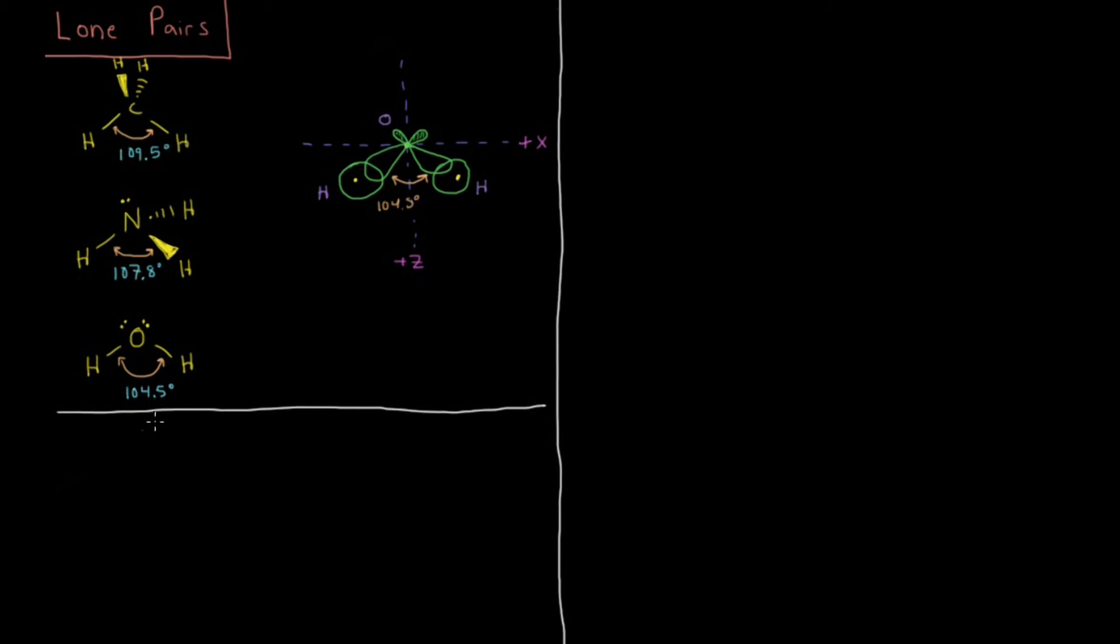So it turns out that the actual two orbitals that form this 104.5 degree angle, if you actually solve for it, you get psi1 equals 0.45s, meaning the 2s on the oxygen atom, plus 0.71px, where I've defined the x-dimension to be along this axis here, and plus 0.55pz, where the z-axis is bisecting the HOH bond angle. And then the whole molecule is in the xz plane.